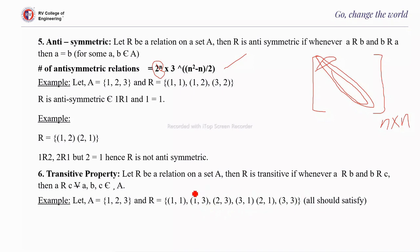Continuing: (2,1) and (1,1) — (2,1) must be present, it is. (2,1) and (1,3) — (2,3) must be present, it is. (3,3) and (3,1) — (3,1) must be present, it is. (3,3) and (3,3) — (3,3) must be present, it is. Every element satisfies the transitive property, so this is a transitive relation. Note: there is no formula to compute the number of transitive relations as there is for other properties.